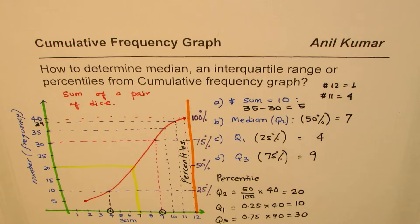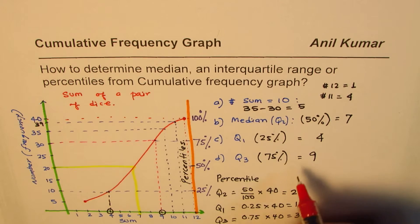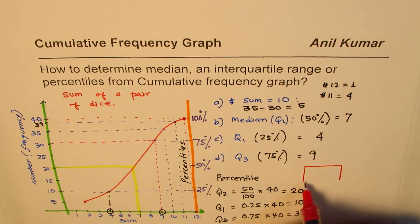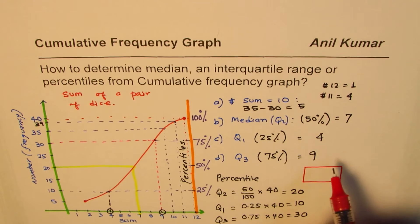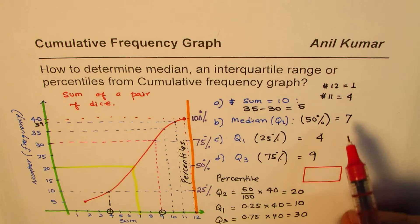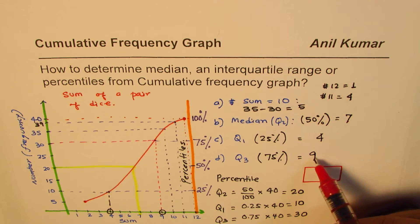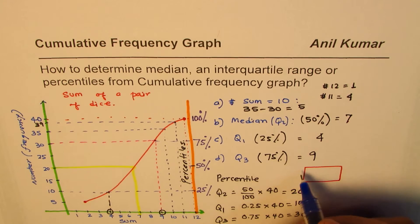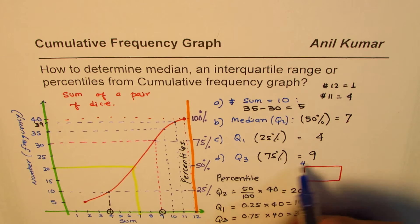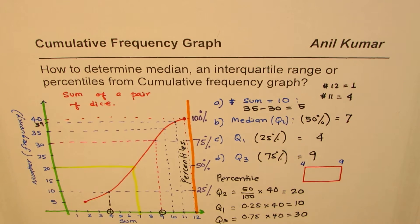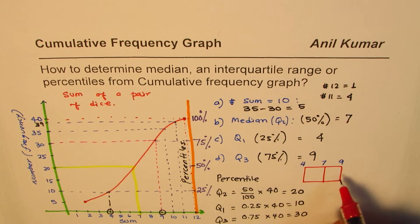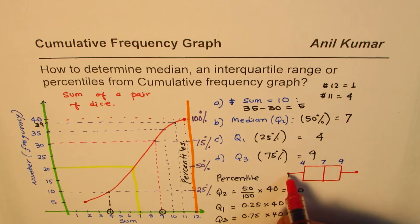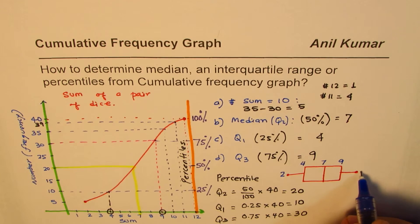As an exercise, you can now plot the box and whisker diagram using these values. We have Q1 = 4, Q2 = 7, and Q3 = 9. The limits of the dataset range from 2 to 12, so the box spans from 4 to 9 with a median line at 7, and the whiskers extend to 2 and 12.